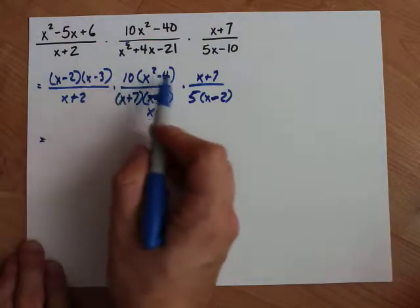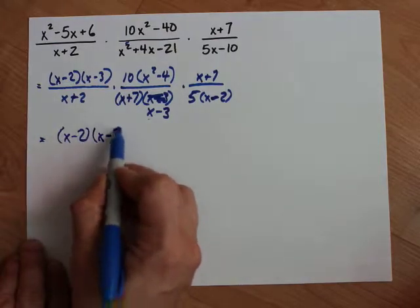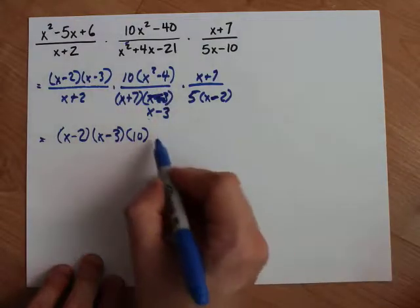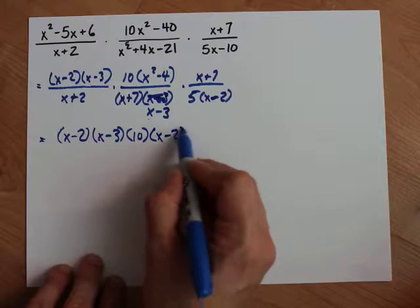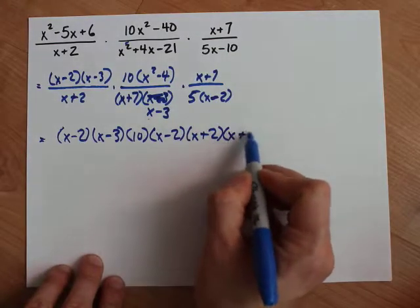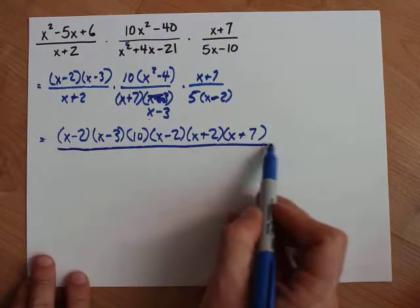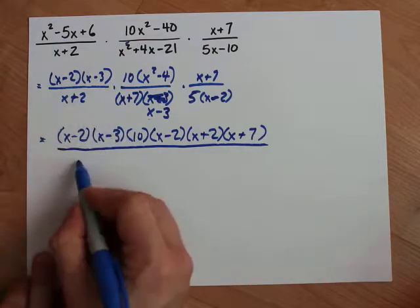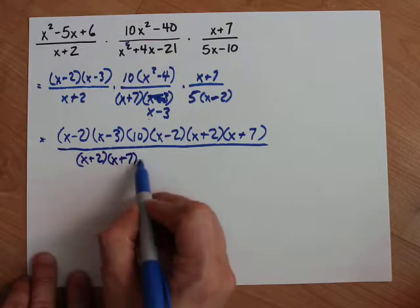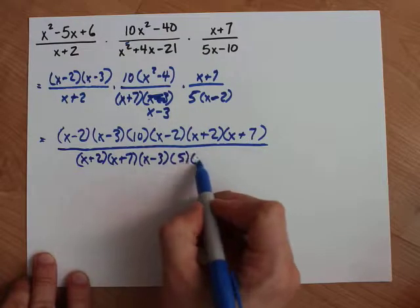Alright, now I'm going to do top times top times top. I have (x-2), (x-3). I have an extra 10. This x²-4 factors more by difference of squares. That's (x-2) and (x+2). And I have an extra x+7 left over. Wow, that's 6 things on top. It's a wild life we're living. I have an x+2 on bottom here, an x+7, an x-3, and a 5, and an x-2.